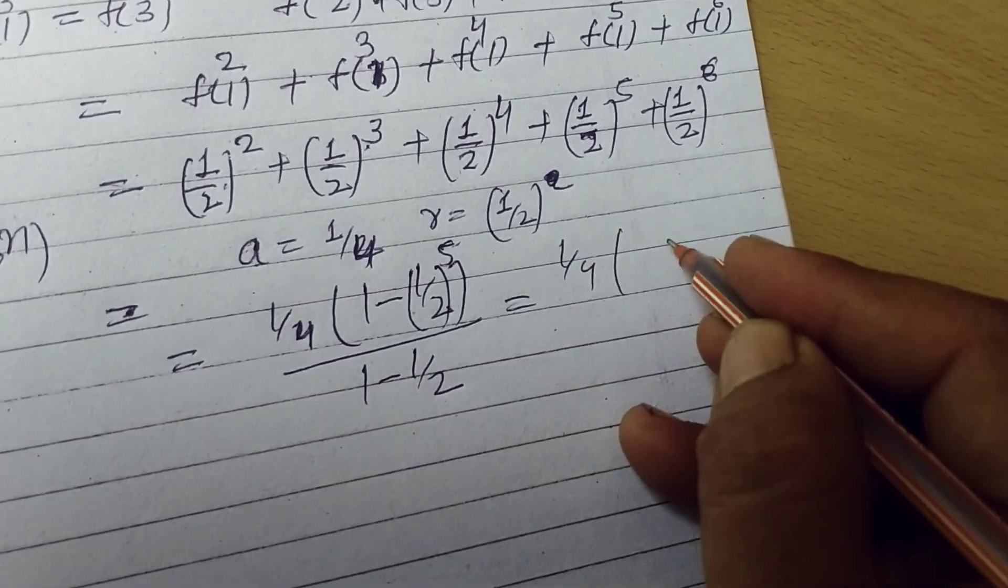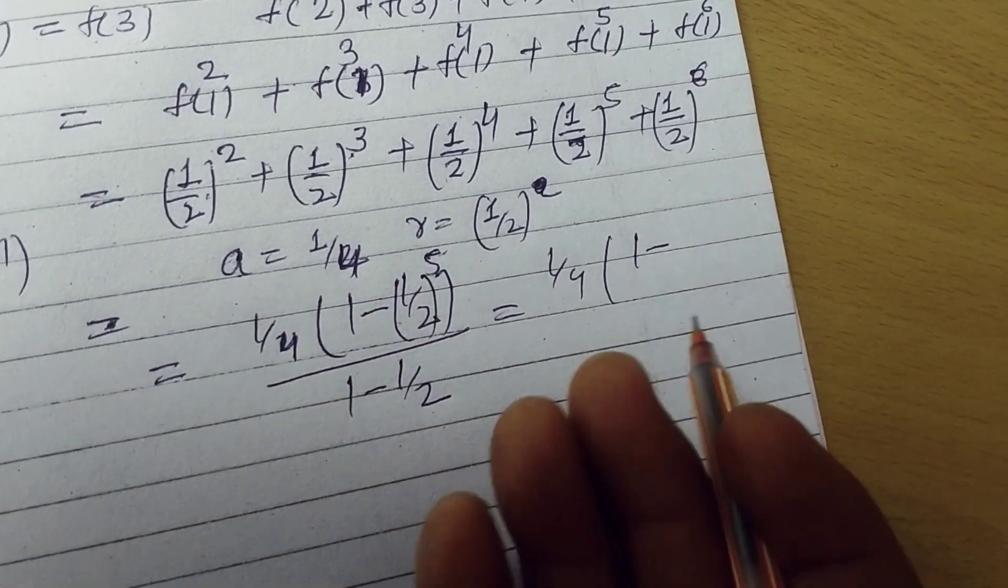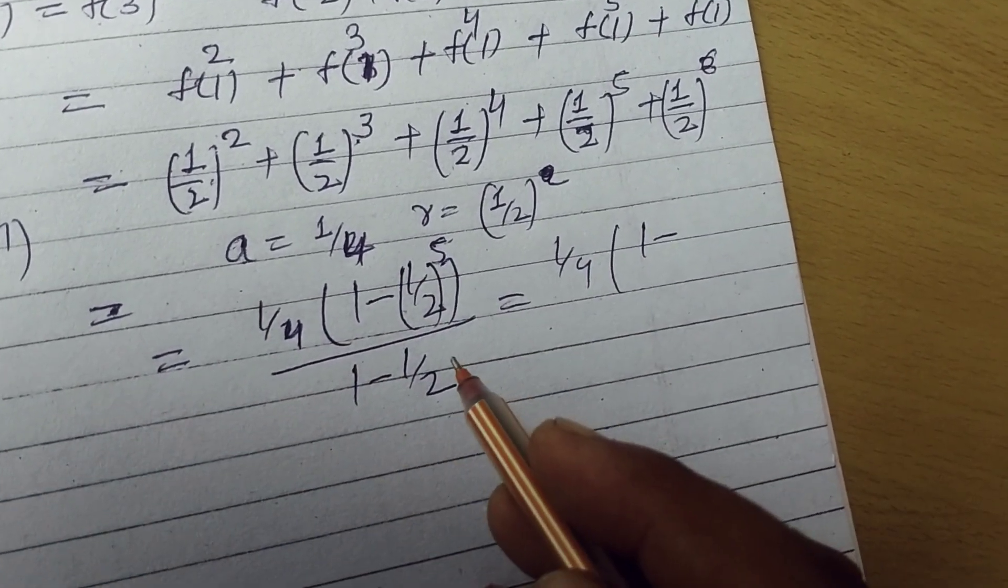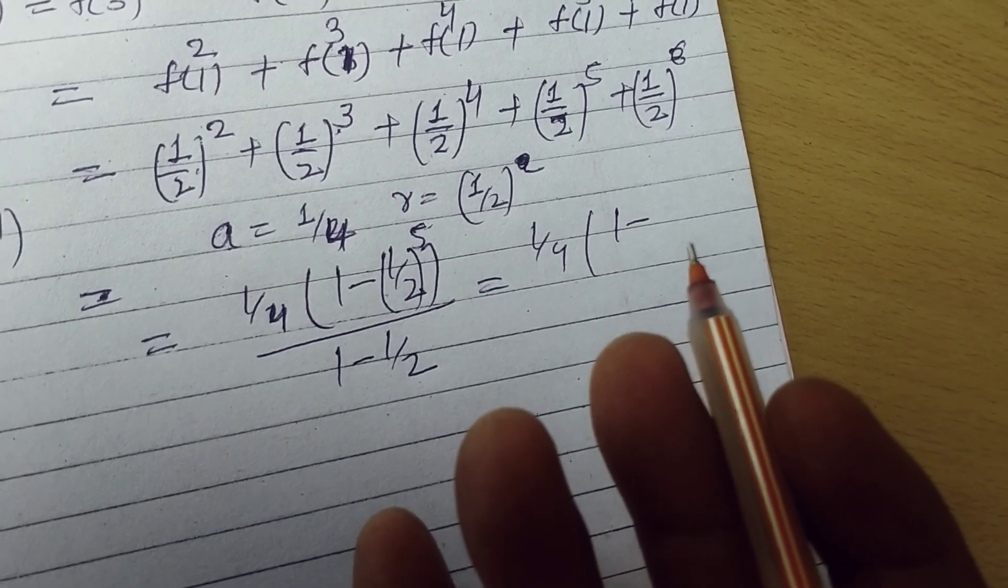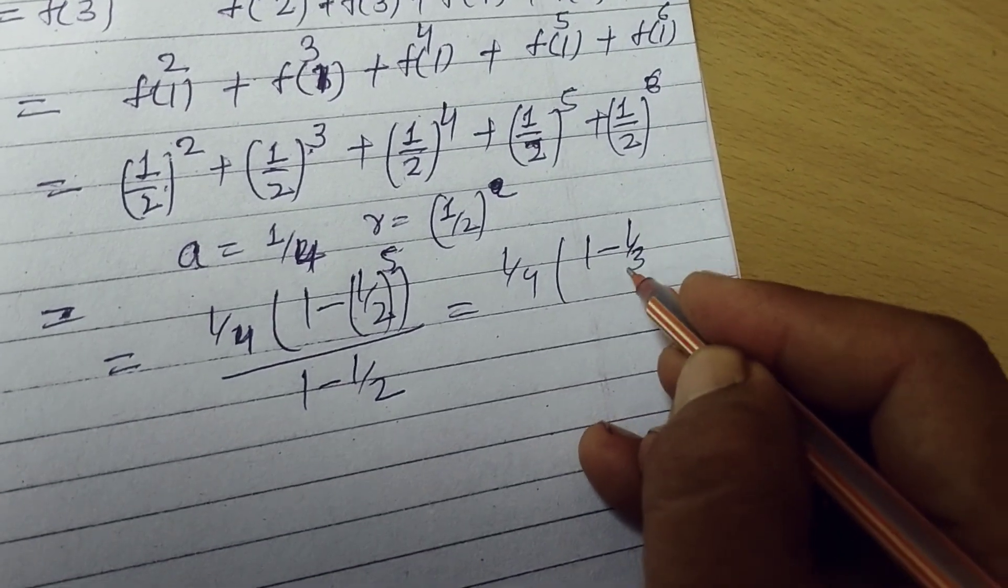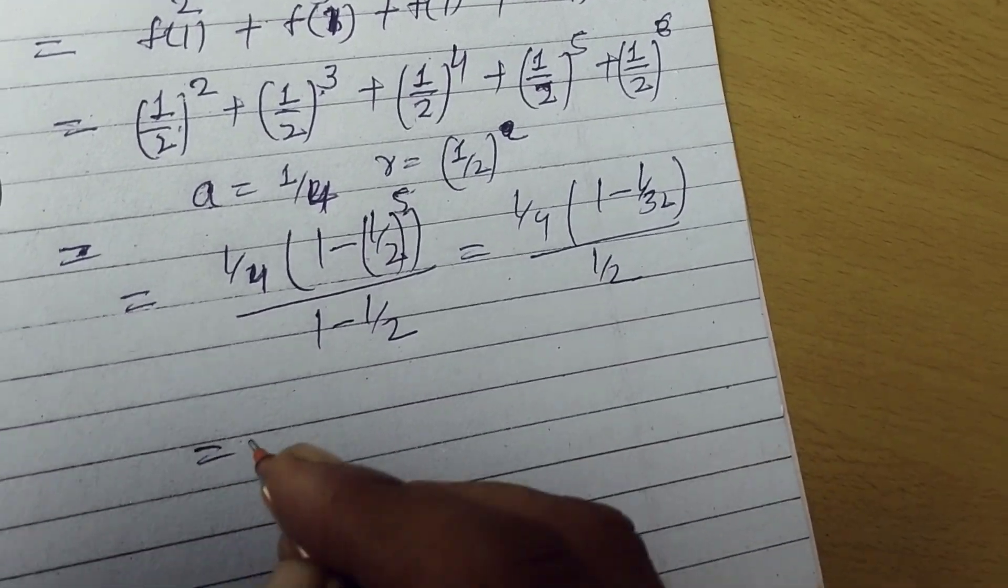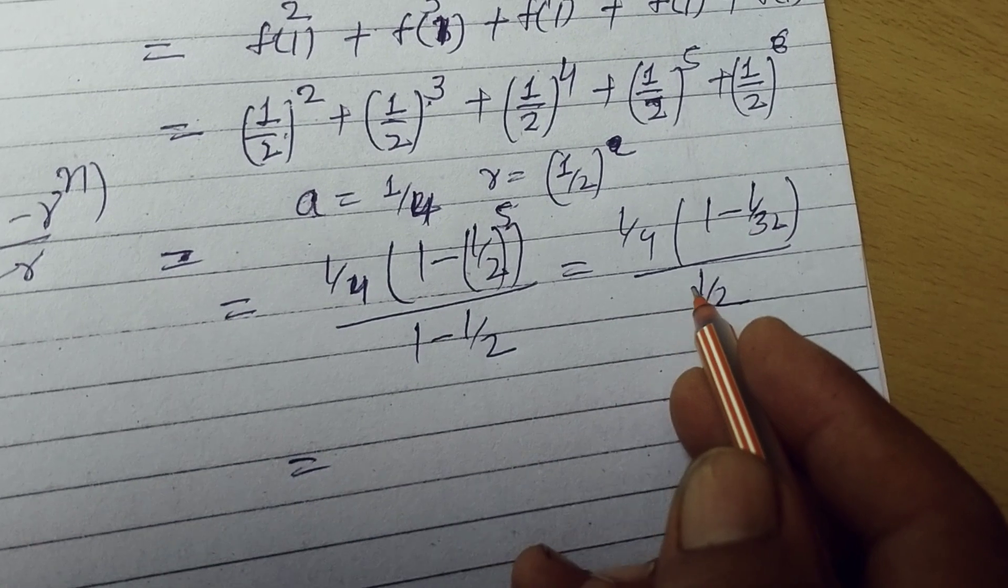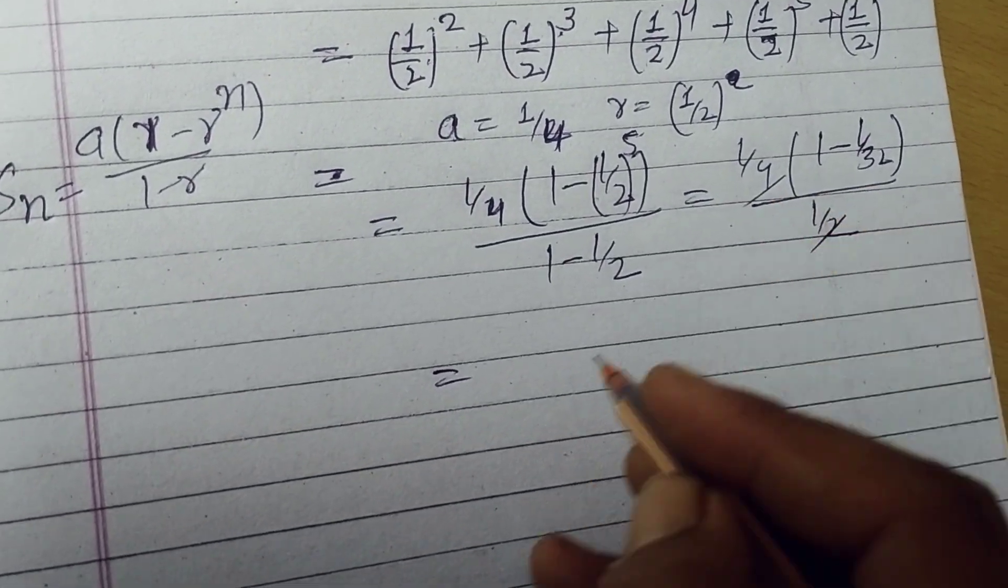So this is 1 by 4, 1 minus 1 by 32, this is half.